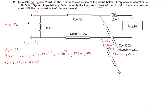Since this stub is connected in parallel with Z2, we need to convert it to admittance form. That's 1 over (negative j*Z0*cot(beta*L)). Remember, 1 over j is negative j, so 1 over negative j becomes positive j, giving us j times (1/Z0) times tan(beta*L).